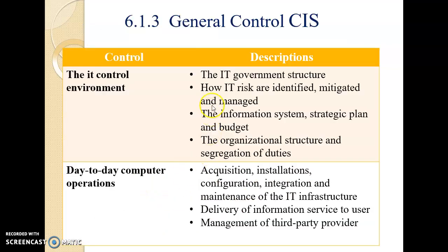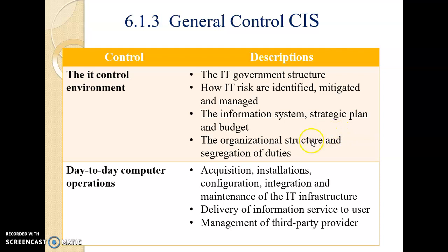Regarding general controls of a computer information system: these controls involve the IT control environment, including the IT governance structure, how IT risks are identified and managed, the information systems strategic plan and budget, and the organization structure and separation of duties.